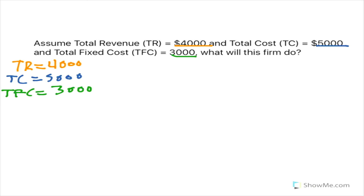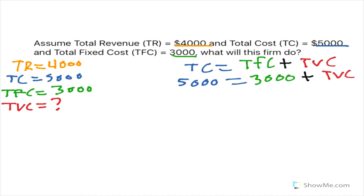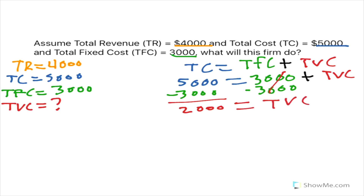First, we've got to find our total variable cost, because total cost equals total fixed cost plus total variable cost. So we set up: TC, or total cost, is $5,000 equals total fixed cost of $3,000 plus total variable cost. We subtract $3,000 from both sides, and we get a total variable cost of $2,000.